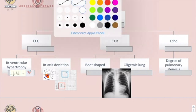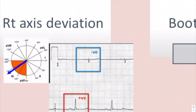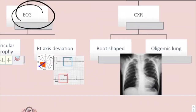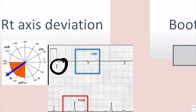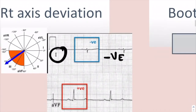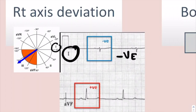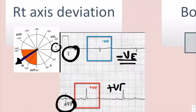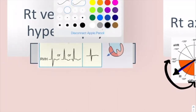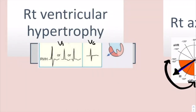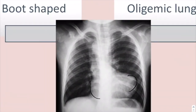Investigations for Tetralogy of Fallot include ECG, chest X-ray, and echo. On ECG, you will see right axis deviation and right ventricular hypertrophy. In right axis deviation, lead I shows a negative deflection of the QRS complex because the electrical vector moves away from lead I, and AVF shows a positive deflection as the electricity goes from 90 to 180 degrees. For right ventricular hypertrophy, in V1 you will see a tall R wave above the 95th percentile, and in V6 you will see a deep S wave.